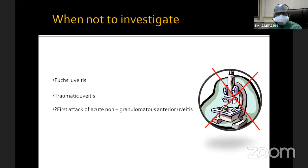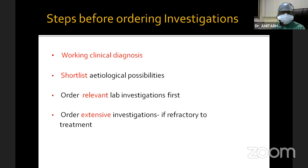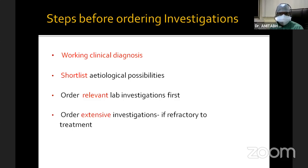There are certain conditions of anterior uveitis where we may not need any investigations, like a Fuchs uveitis, a traumatic uveitis, and probably the first attack of an acute non-granulomatous anterior uveitis. So before we order investigations, after a detailed history and a complete examination, we would want to come to a working clinical diagnosis and try to shortlist etiological possibilities, fit this into the phenotypes available, and then order only relevant lab investigations first.